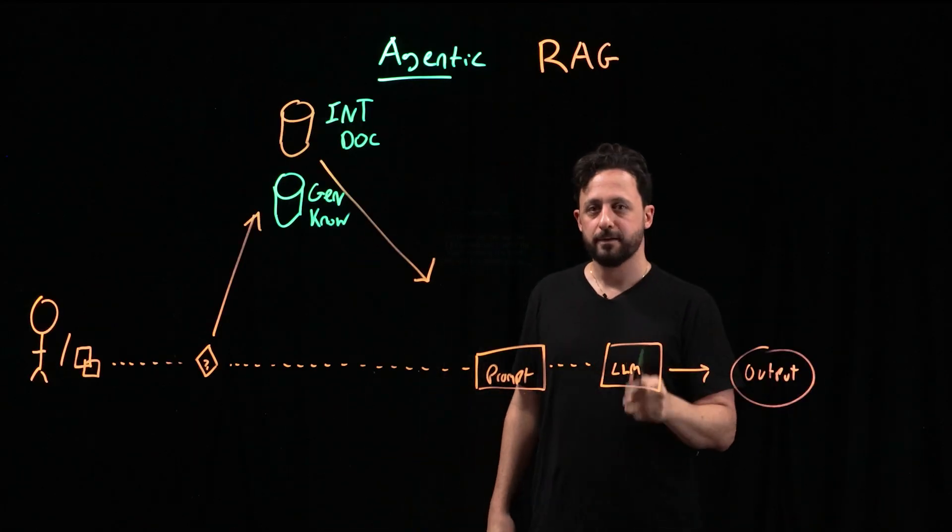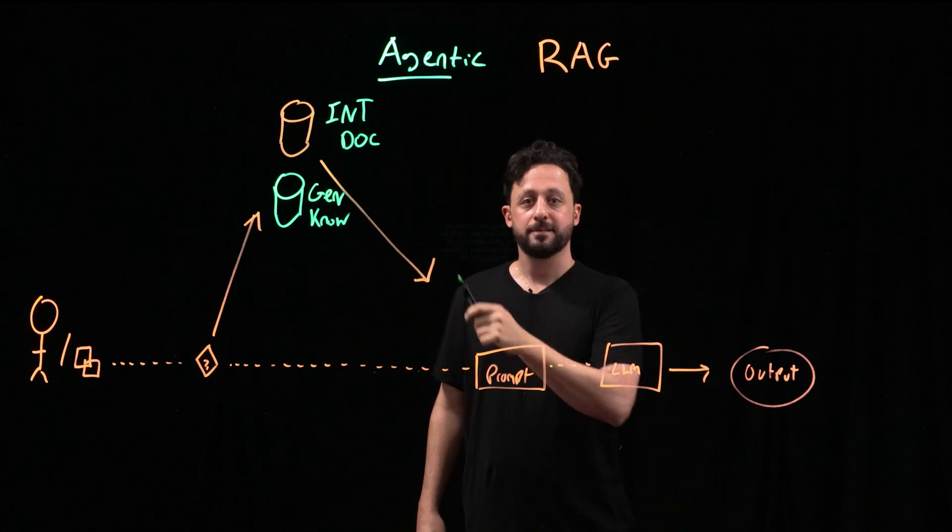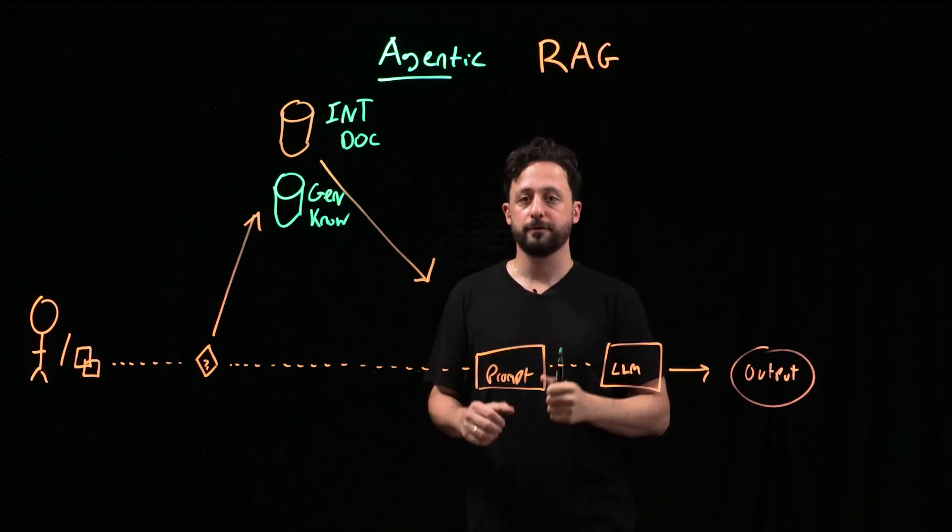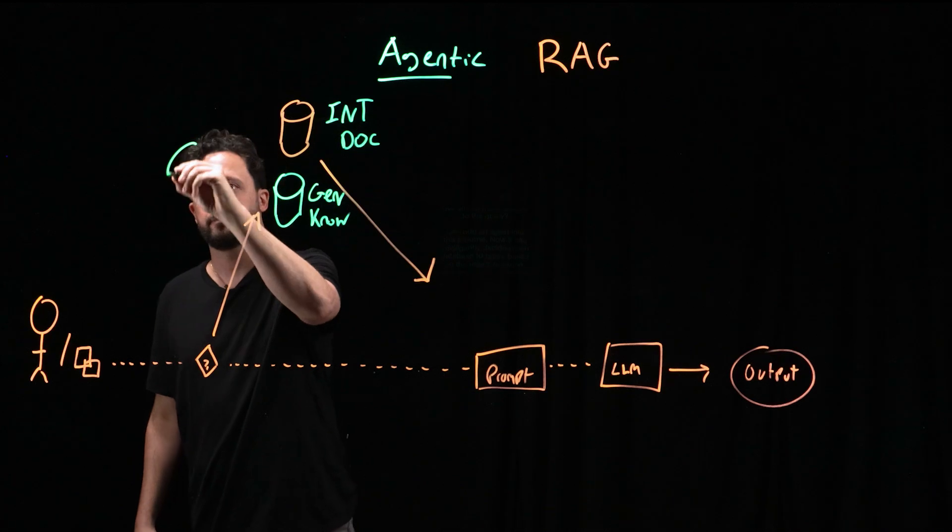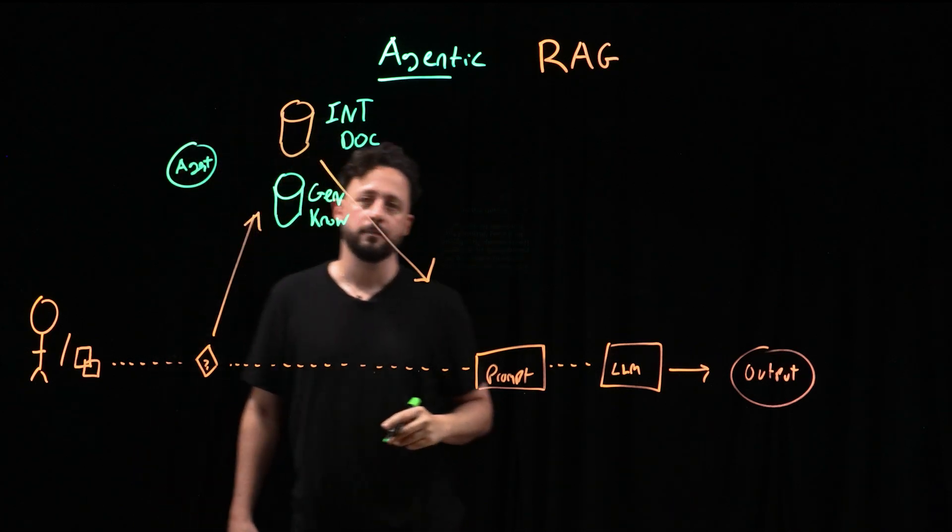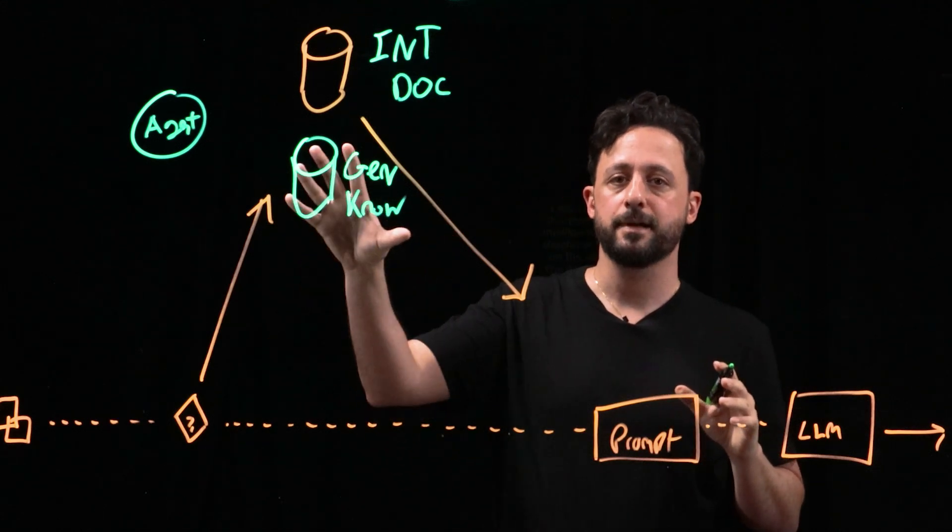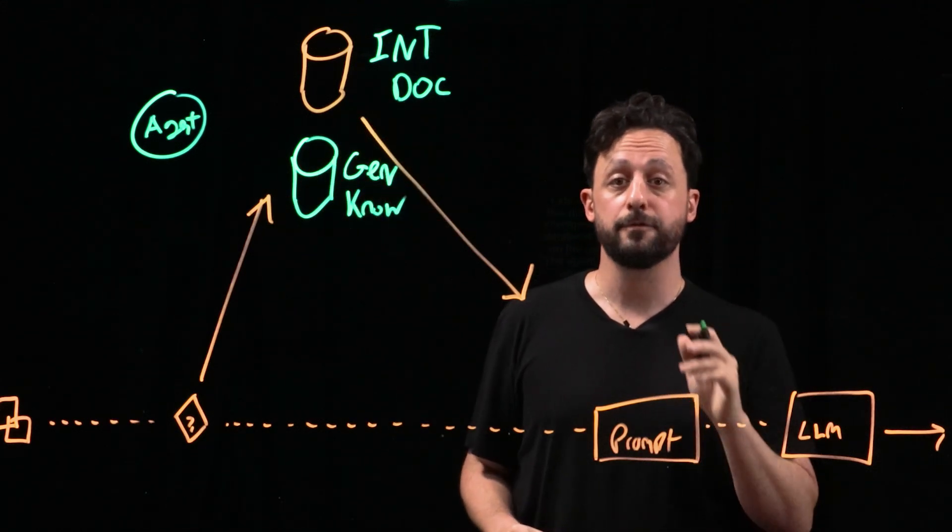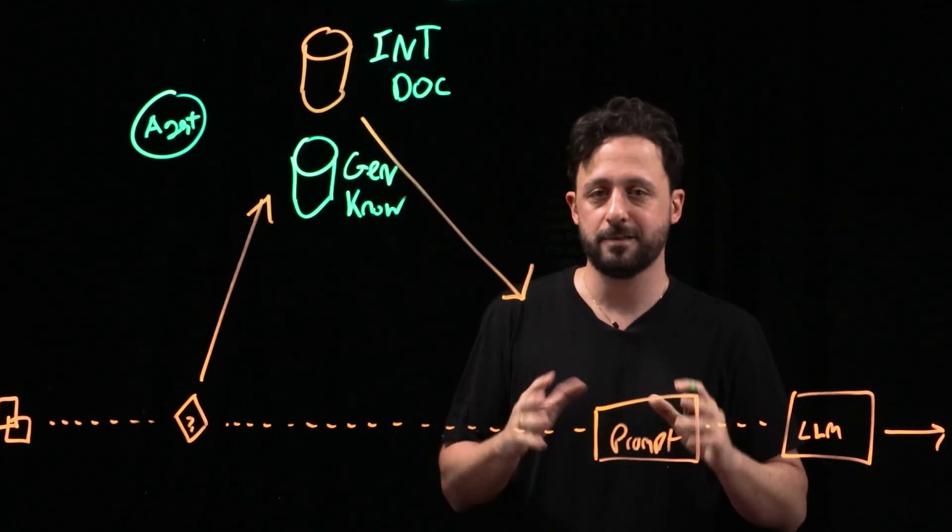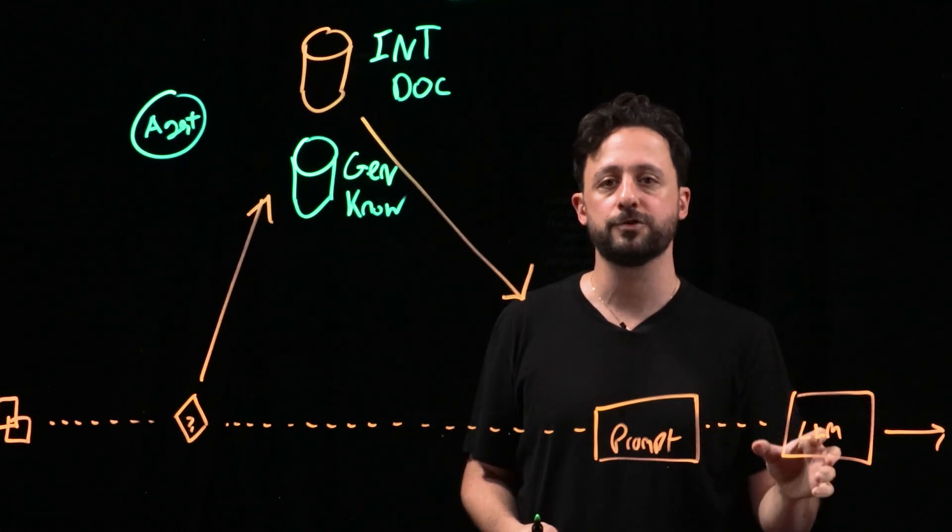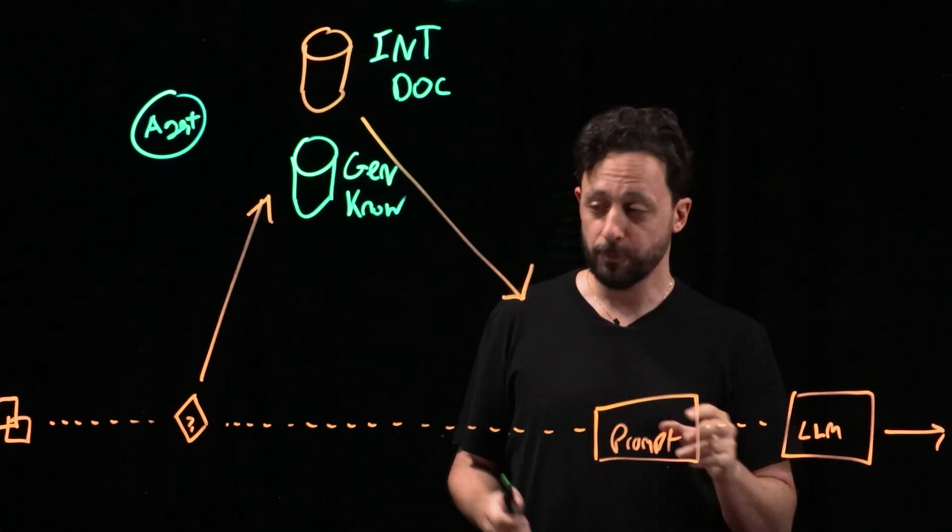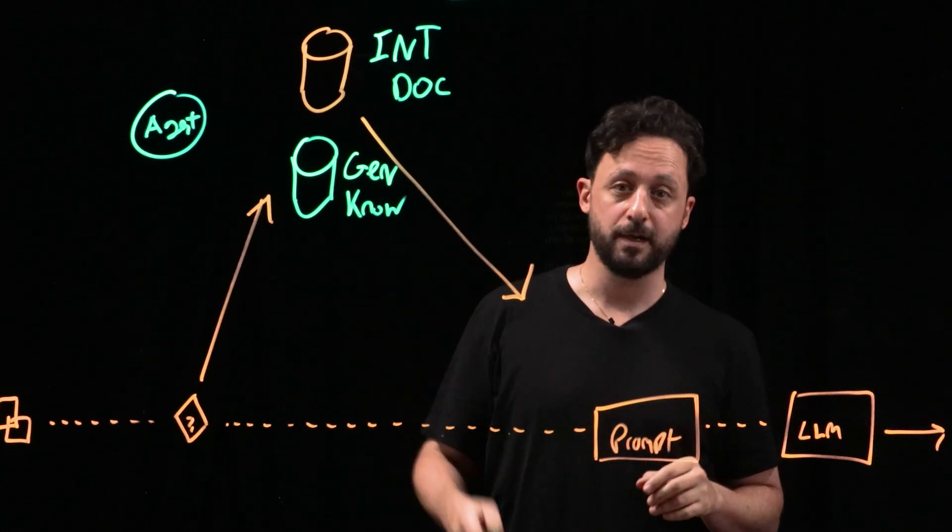So how can we get the LLM to use the vector database that contains the data that will be most relevant to the query? Let's add that agent into this pipeline. Now this agent can intelligently decide which database to query based on the user's question. And the agent isn't making a random guess. It's leveraging the LLM's language understanding capabilities to interpret the query and determine its context.